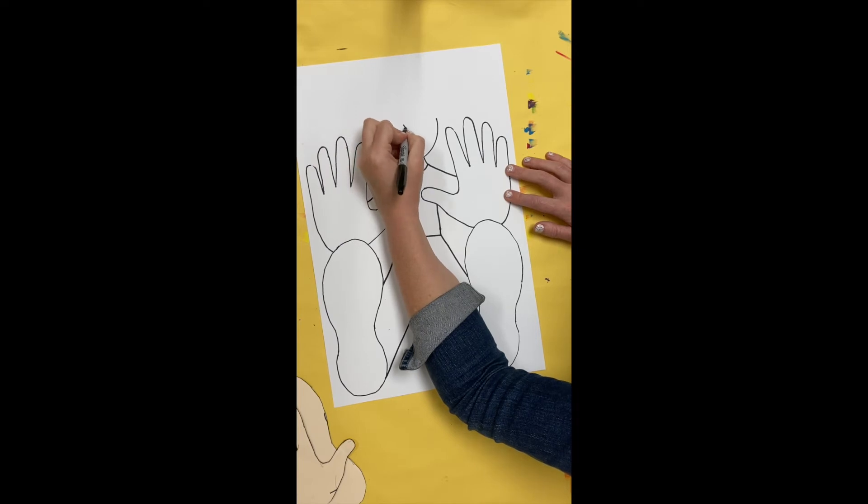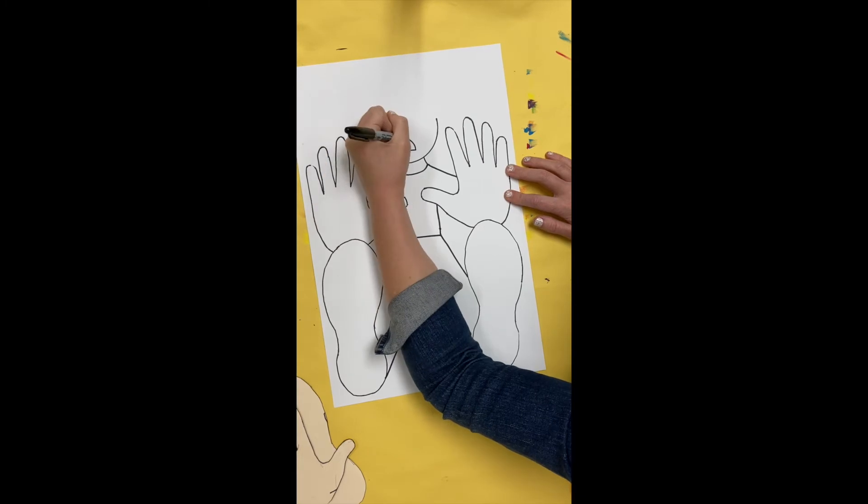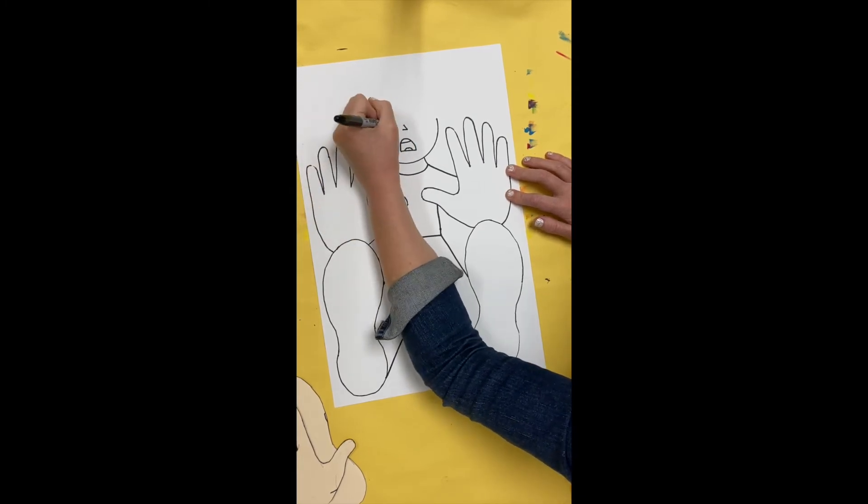Now let's add the details for the face. I am going to start with the nose and the mouth. Think about what expression you want to have as you are falling.